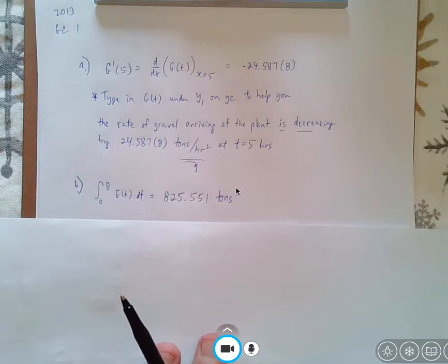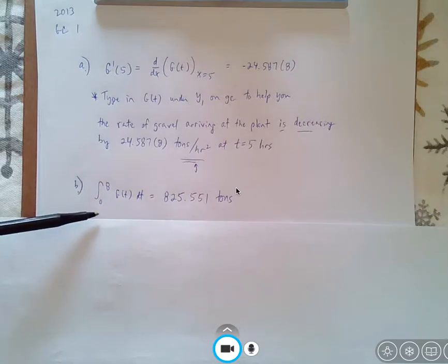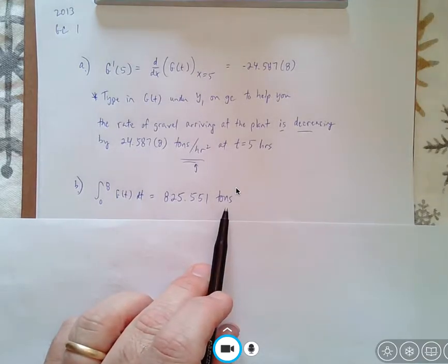Question B is a very straightforward question, and again, that's the question you want to get right. The amount of unprocessed gravel in the 8 hours is going to be the integral from 0 to 8 of the function. And again, that's a math 9 question. You have to write the integral in that you're using. Don't forget your units. In this case, it's tons.